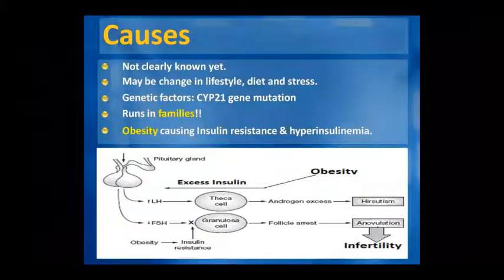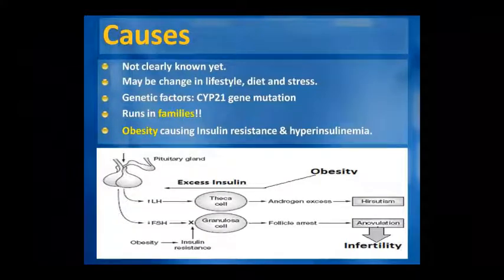Obesity, insulin resistance, and hyperinsulinemia are very significant factors for PCOD. From the pituitary gland, LH secretion increases while FSH secretion is relatively decreased. LH affects the theca cells, while FSH affects the granulosa cells, influencing the androgen axis.